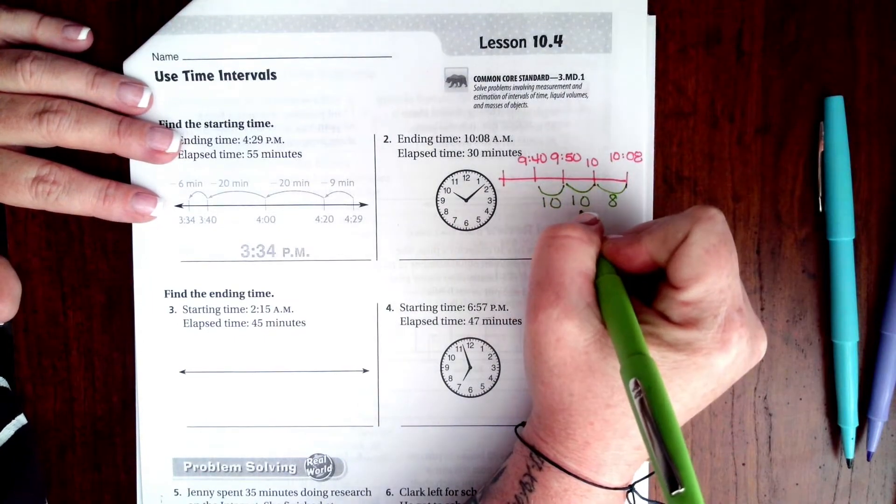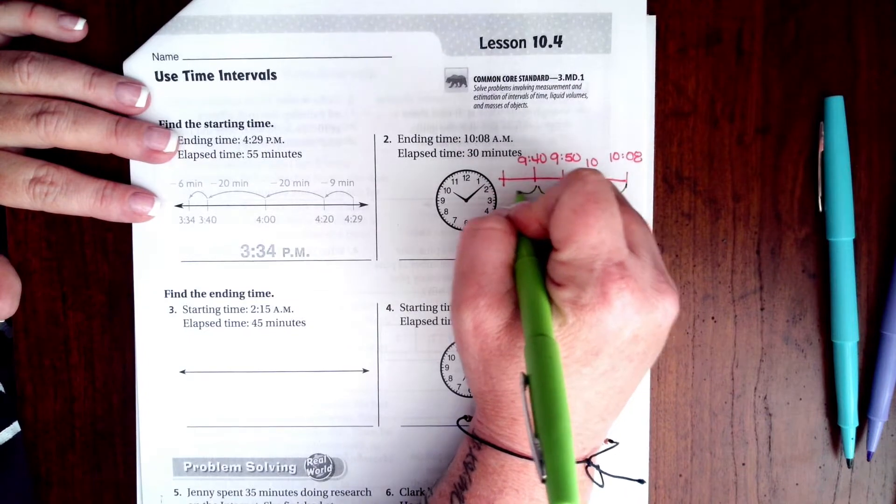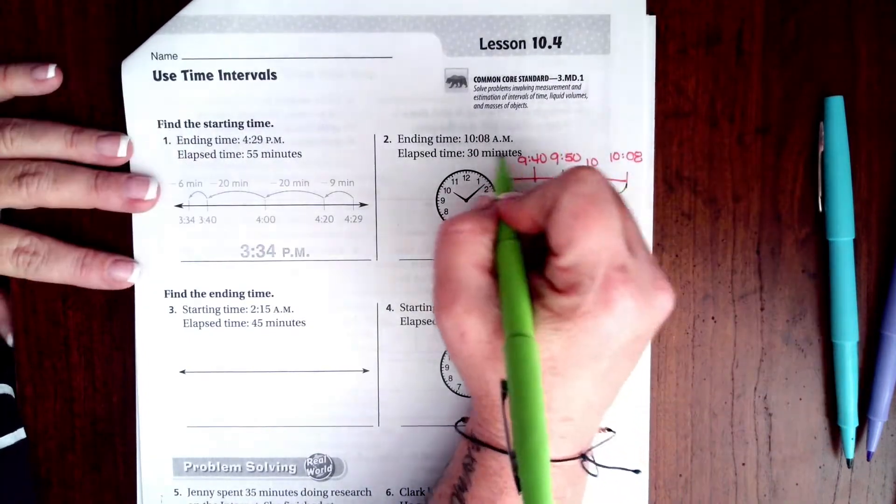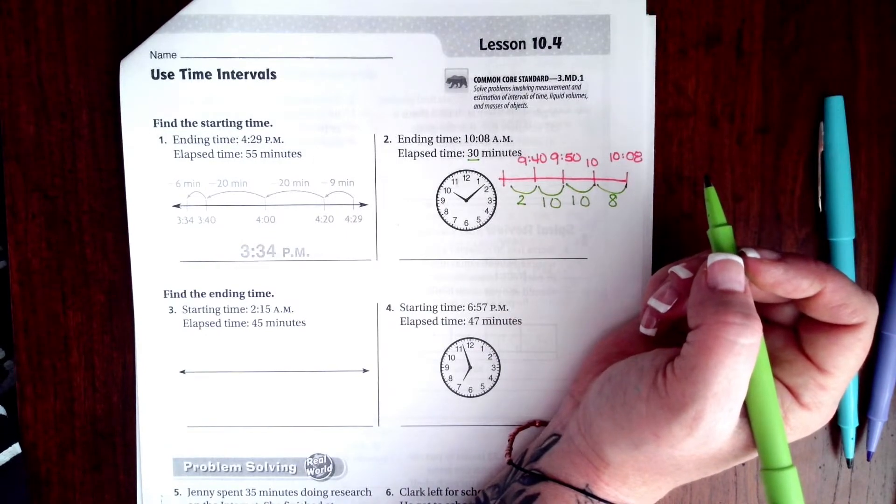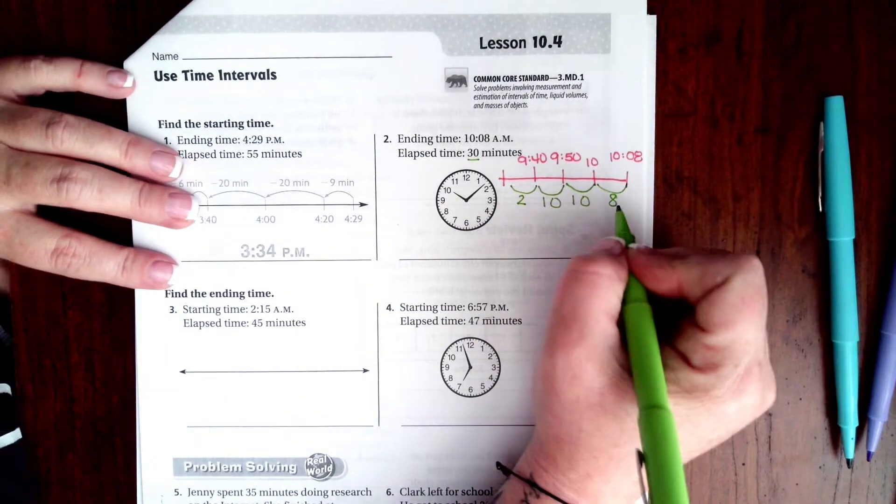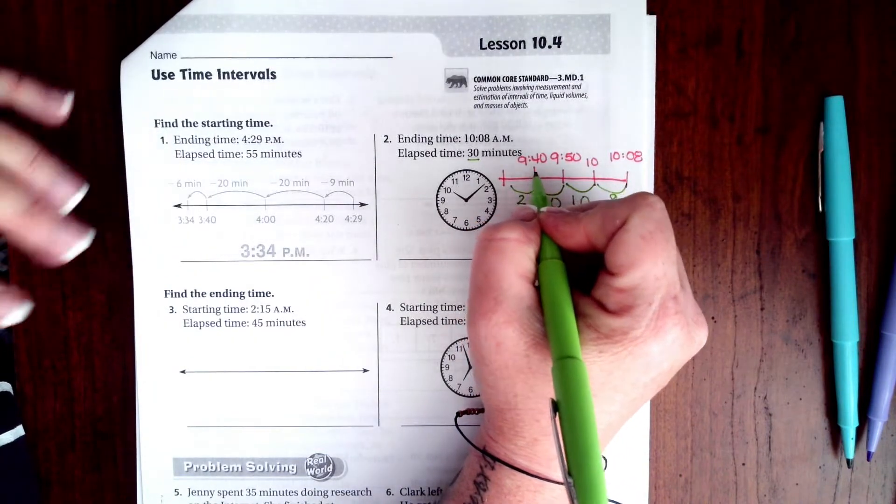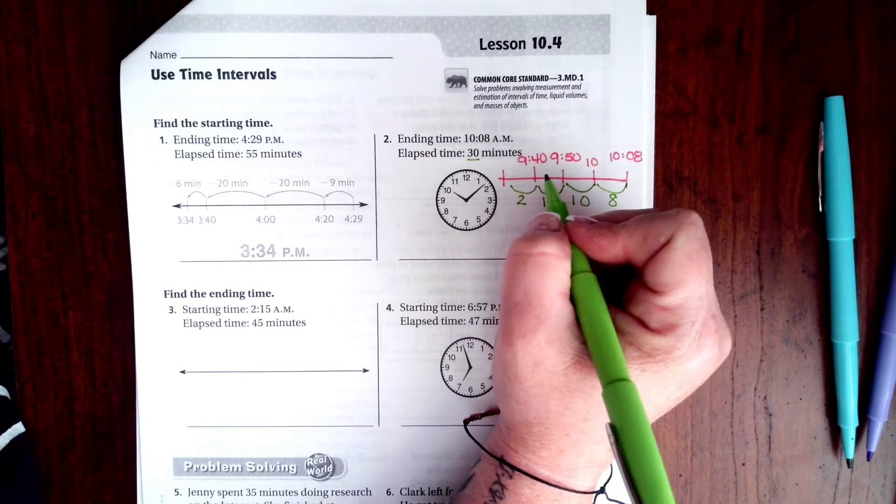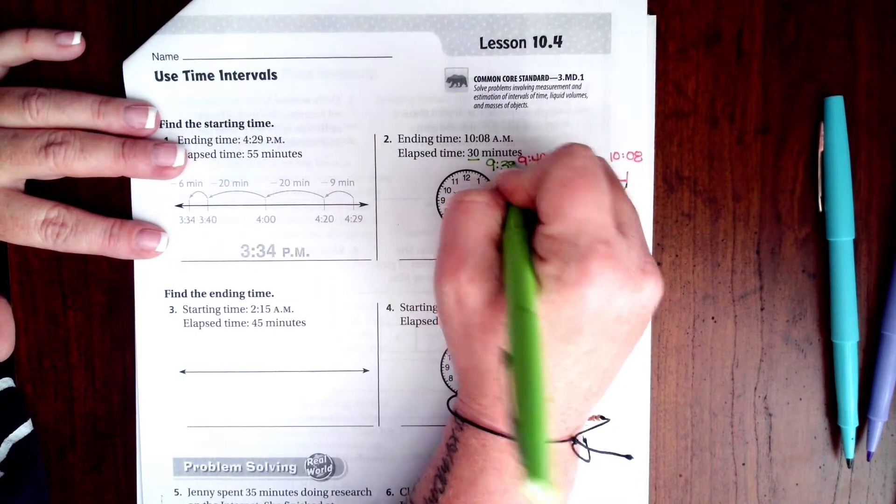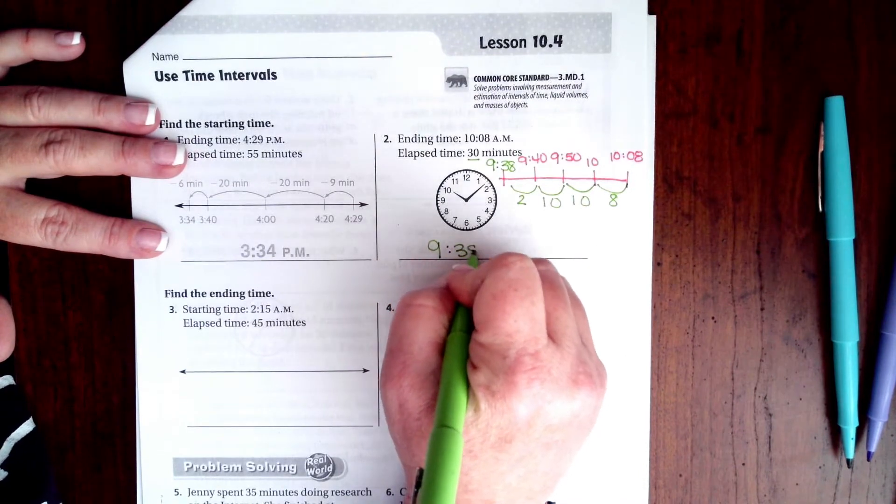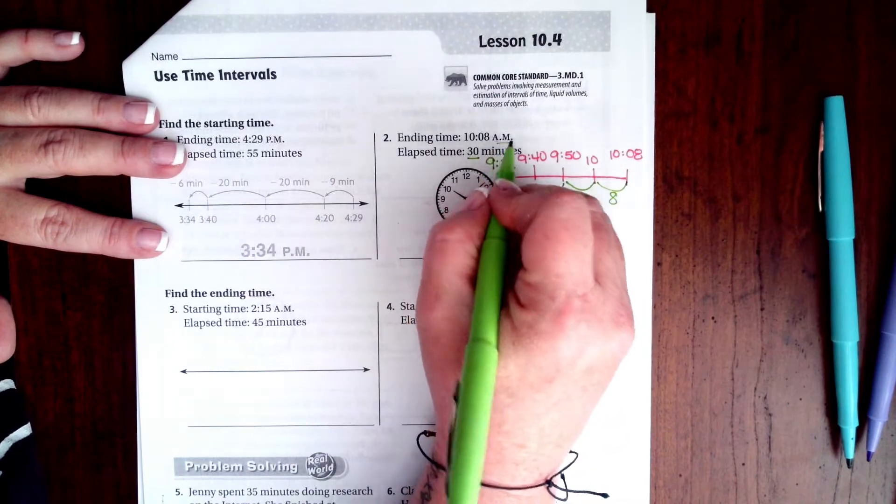Well, this gives me 10 plus 10 is 20 plus 8. So now, I need to take away 2 minutes so that I take away the 30 minutes. Because we're going backwards in time, not forwards now. So from 9:40, I need to subtract 2. Well, 40 minus 2 is 38. So, 9:38. 9:38 AM, because it says AM up here.